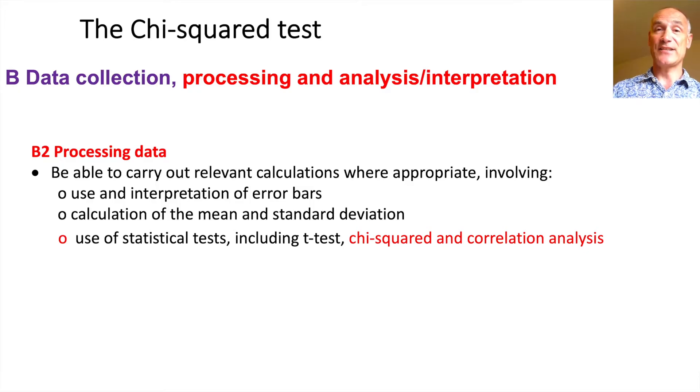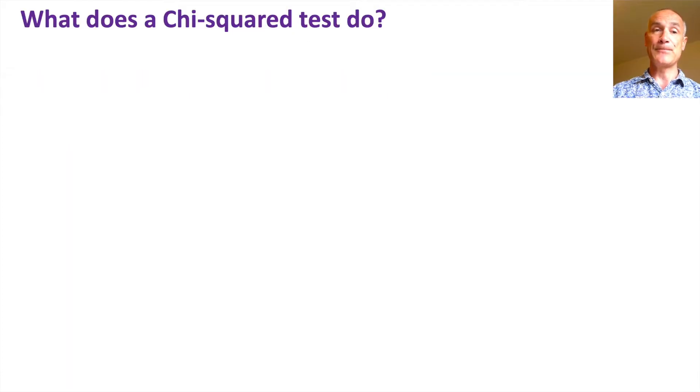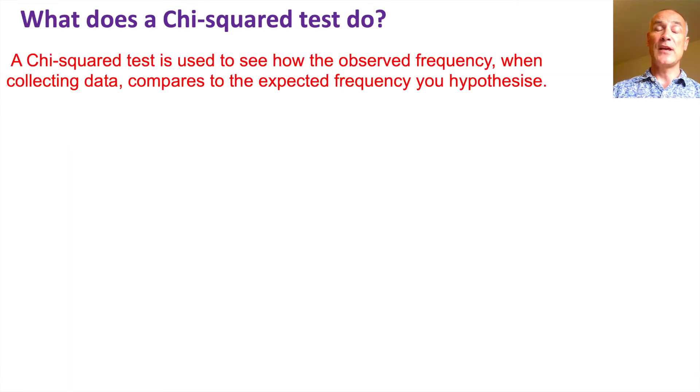Last lesson we looked at t-tests to either reject or accept a null hypothesis. This time we're going to be looking at chi-squared tests and also at the end we're going to quickly go over correlation analysis which you should be very familiar with from GCSE Maths and Science. So what do chi-squared tests do? Well, a chi-squared test is used when you're comparing observed frequency of things or observed numbers using experimental data compared to the expected frequency that you've made in your hypothesis. The best way to explain it is by showing you two examples.